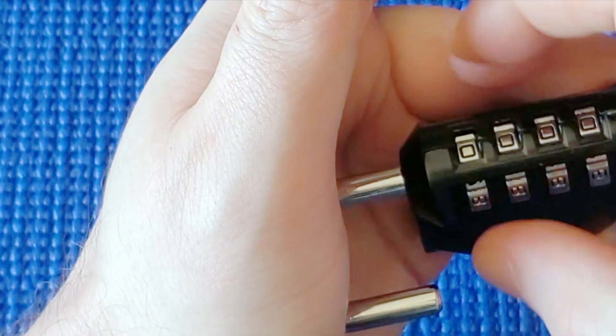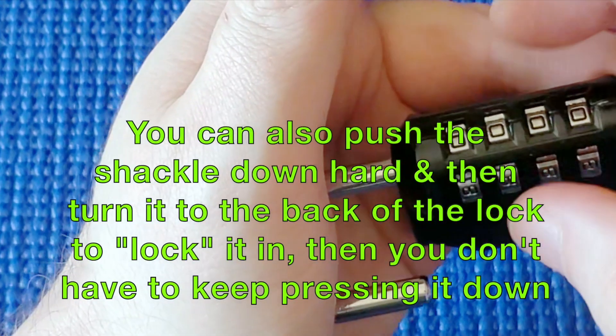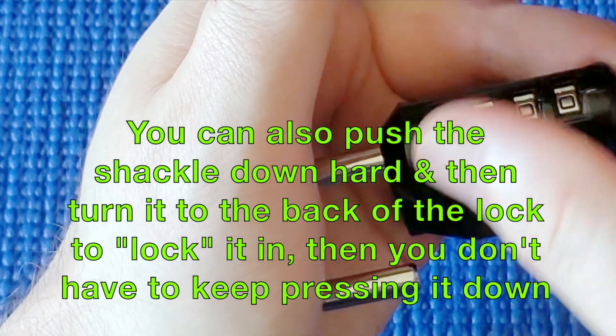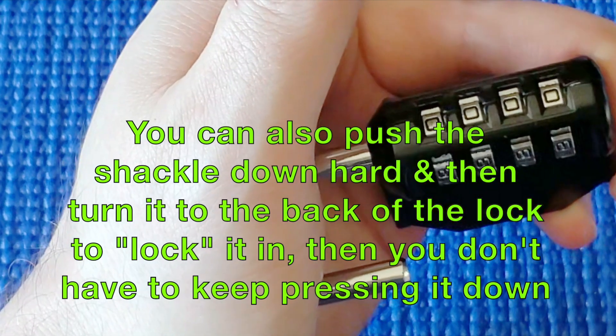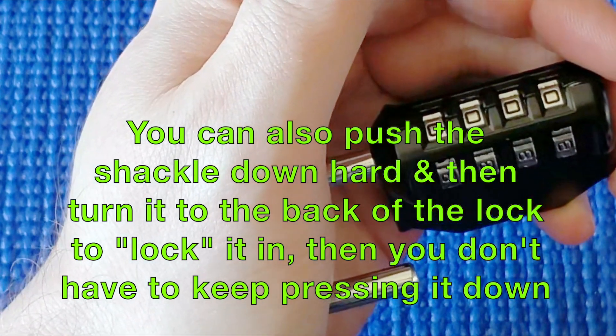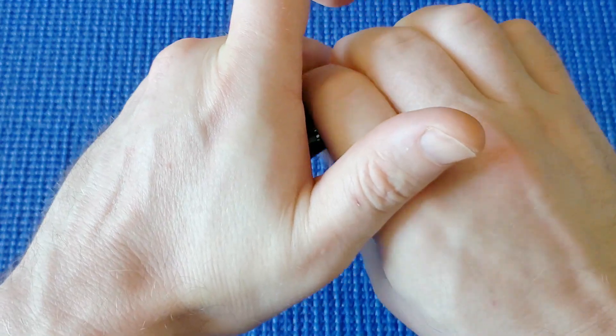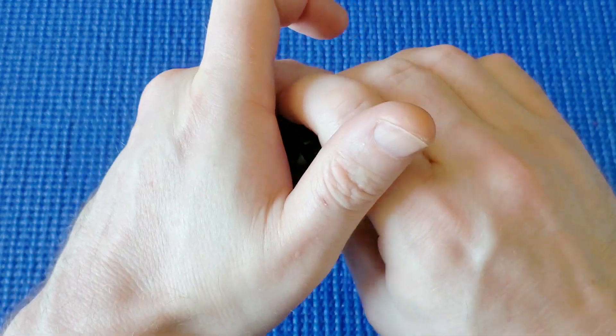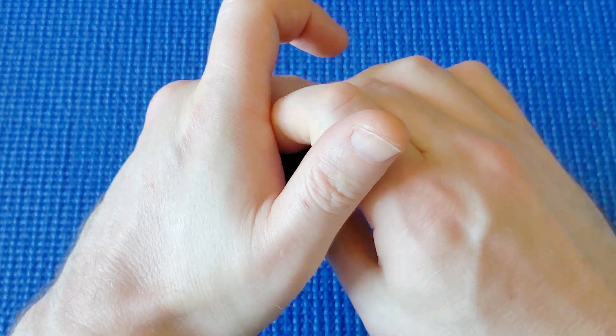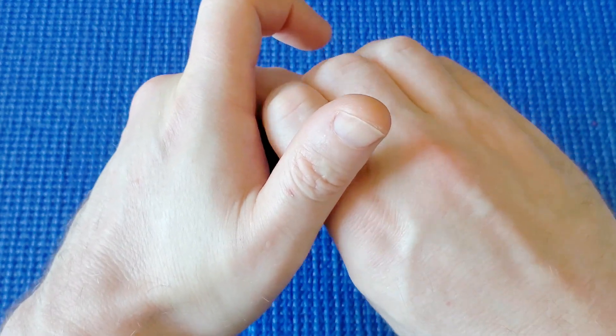You have to hold it down quite hard, otherwise not all the wheels will be engaged when you change the combination, and you'll mess up your combination. So I'm going to change it to a combination I don't know by just scrambling the wheels. All the wheels are moving easily. If they don't, it means you're not pressing it down properly.